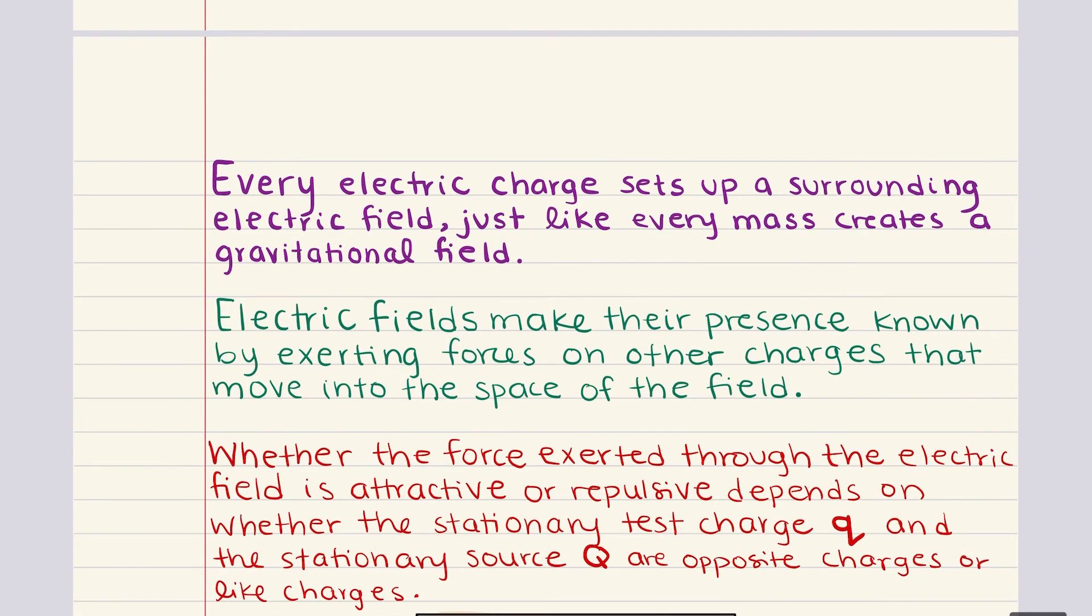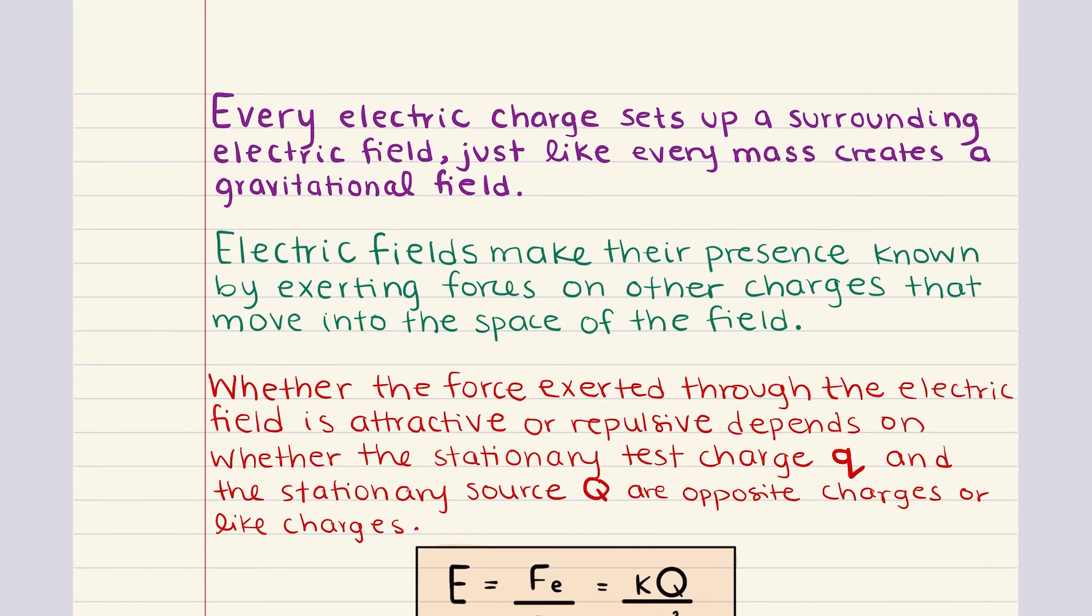Now that we've covered Coulomb's law, let's expand on how charges influence the space around them by introducing the concept of electric fields. Just as every mass creates a gravitational field, every electric charge sets up a surrounding electric field. This electric field is essentially the region around a charged object where it can exert a force on other charges. It's important to recognize that these fields exist even if no other charges are present in this space. They are a property of the charge itself, much like a gravitational field exists around a planet, regardless of whether another object is in that field.